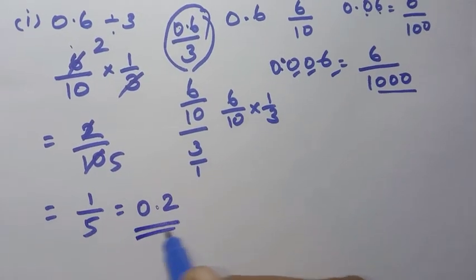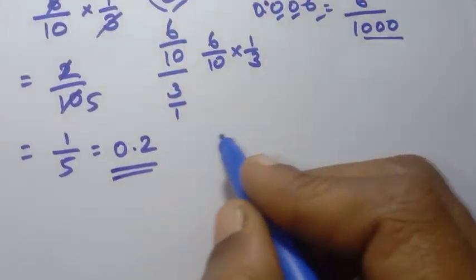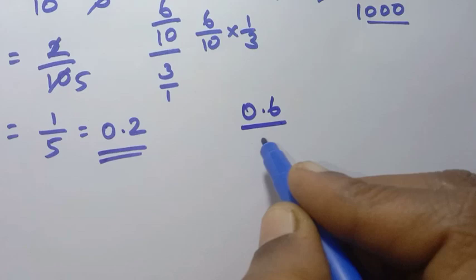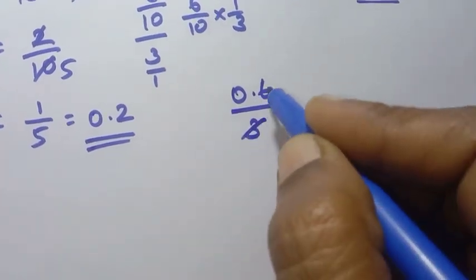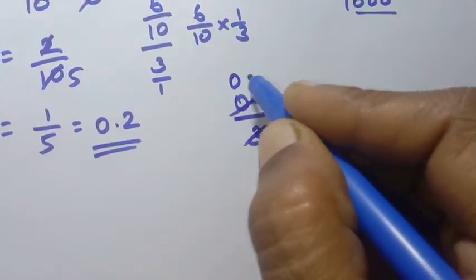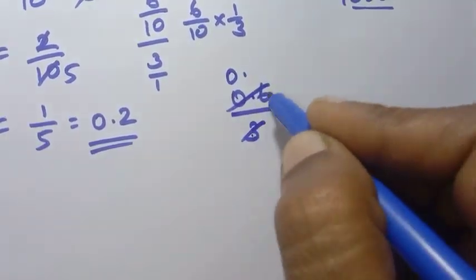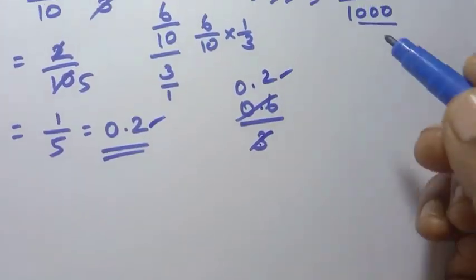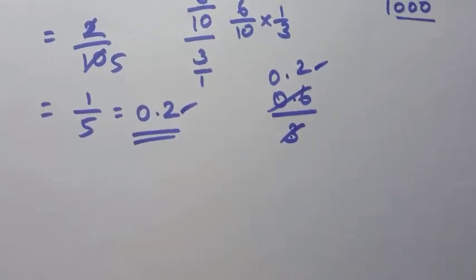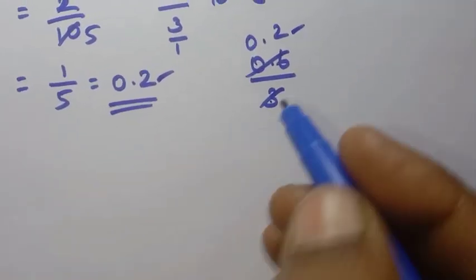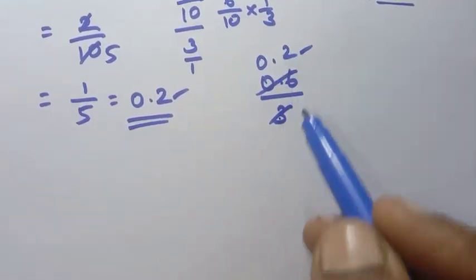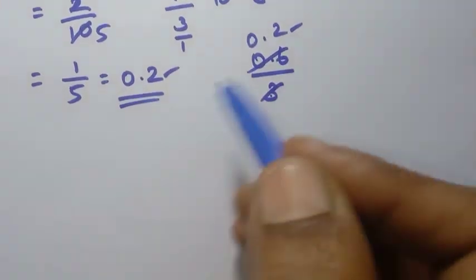0.2 is the answer. You can also check this directly: 0.6 divided by 3 equals 0.2. This step-by-step fraction method is used in this class; in higher classes you will find a more direct method. Now the second question: 0.90 divided by 5.